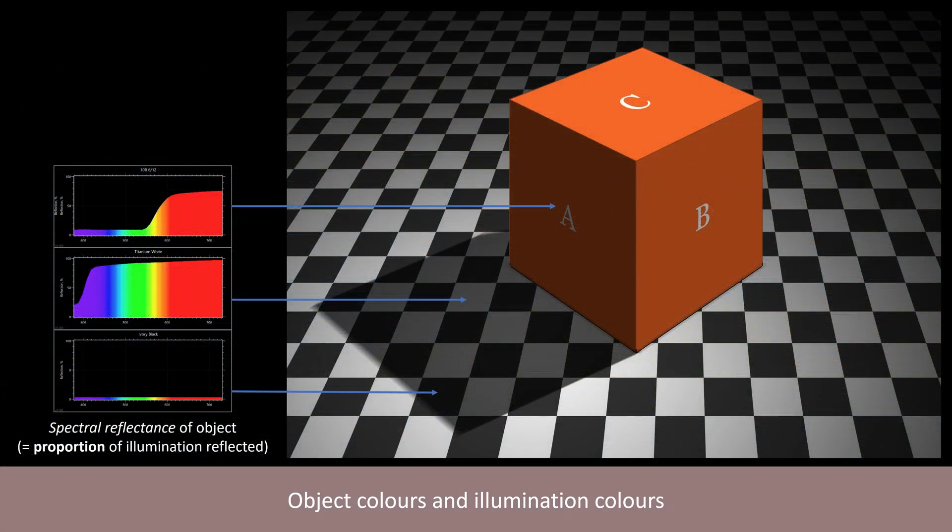Because we're mortal objects ourselves, the colours we notice most are those of other objects. The colour we perceive as belonging to an object is the way in which we perceive its physical property of spectral reflectance, that is, the proportion of the light of each wavelength that the object reflects, as far as this is accessible to our visual system.